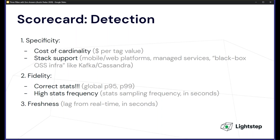The last point on the scorecard is freshness of data. If you're trying to fix a problem impacting people in real time, you want your observability data to be close to when it actually happened. If there's more than about five seconds of lag between when an event occurred and when you can see it, it's going to be hard to see cause and effect.